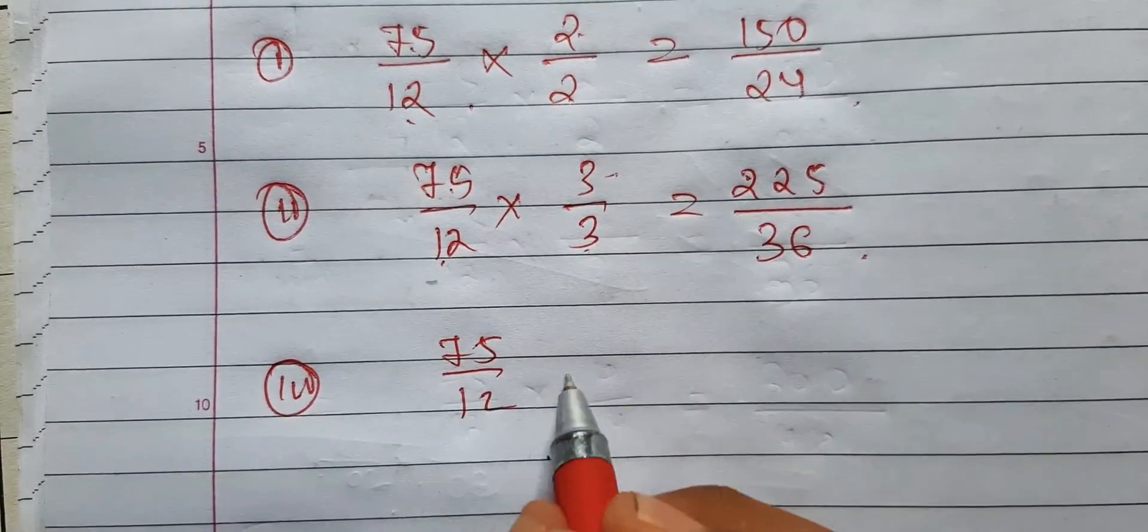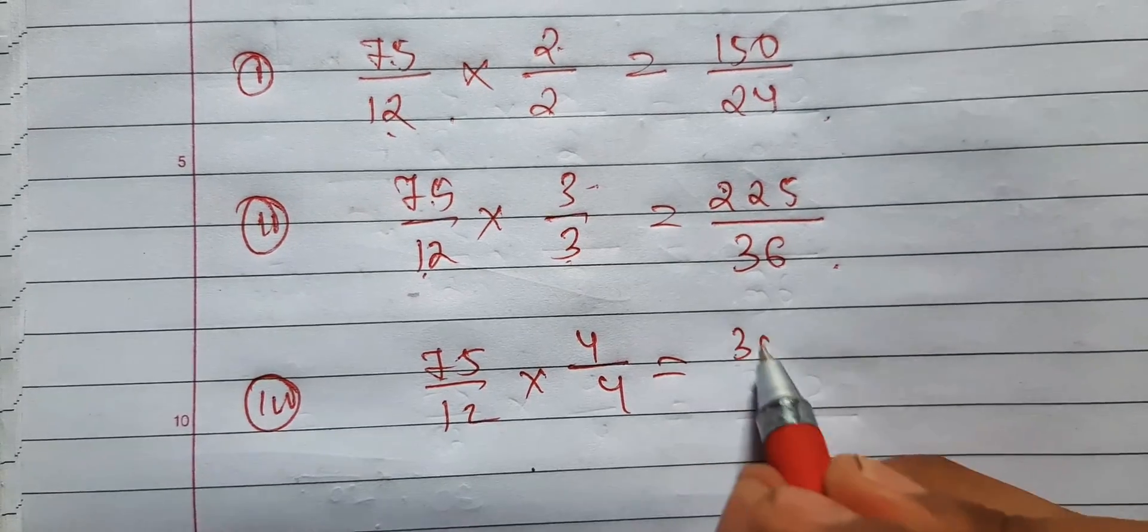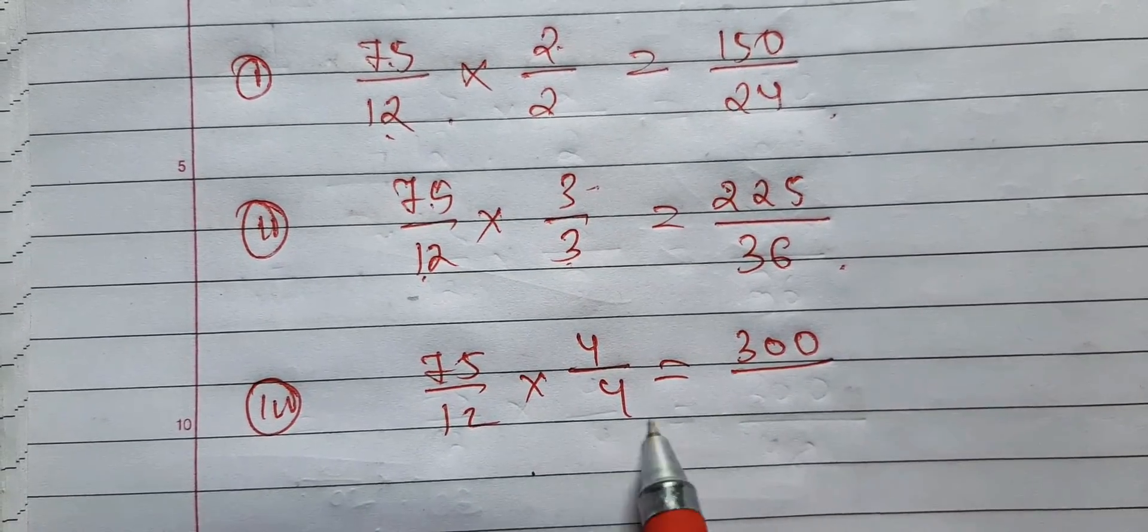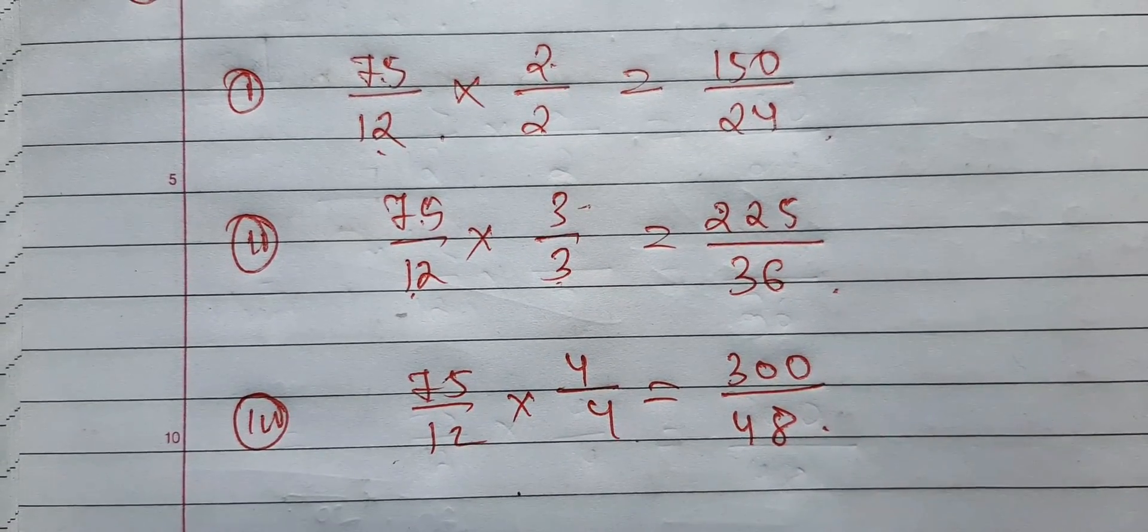75 into 12, so here now you can take 4. If you multiply, you'll be getting 300 and then 48. So this is the answer.